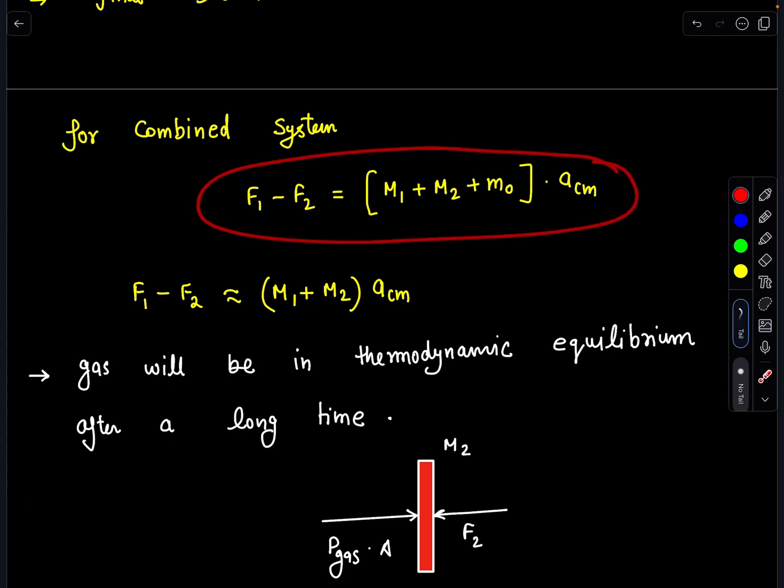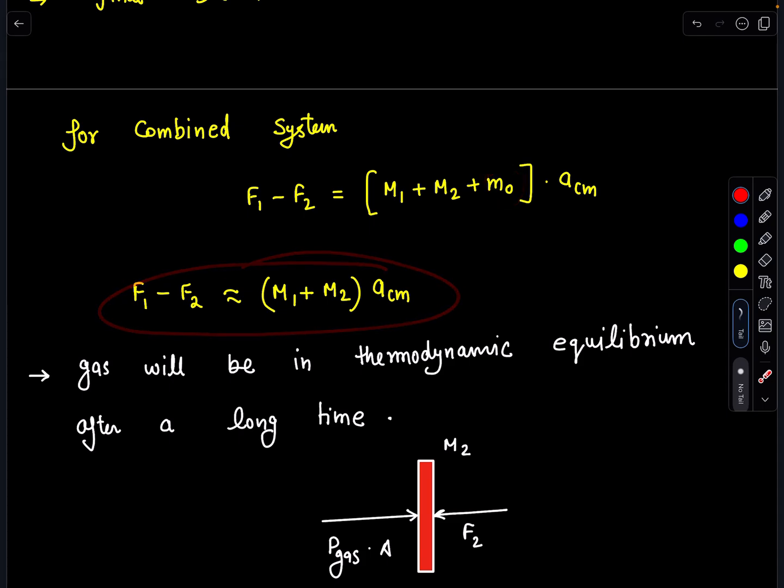For combined system we can write: in the beginning F1 minus F2 equals M1 plus M2 plus m0 times a_cm. But here mass of the gas is negligible compared to pistons, so we can say F1 minus F2 equals M1 plus M2 times a_cm. Now, the gas will be in thermodynamic equilibrium after a long time.